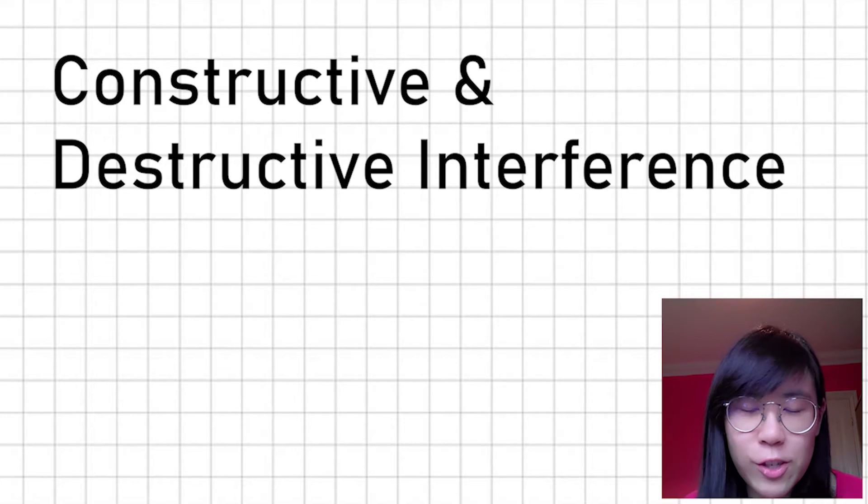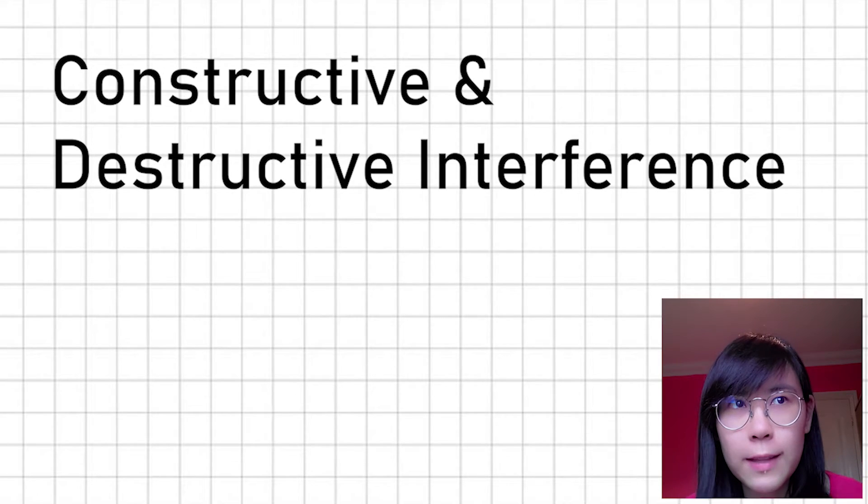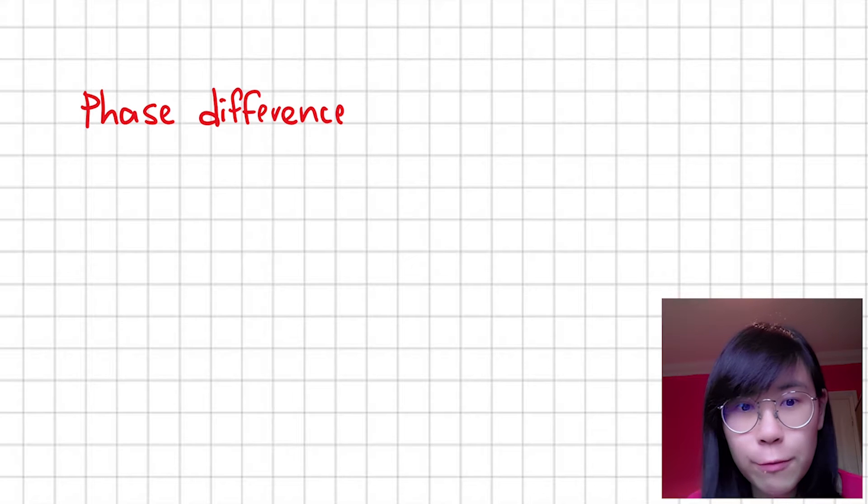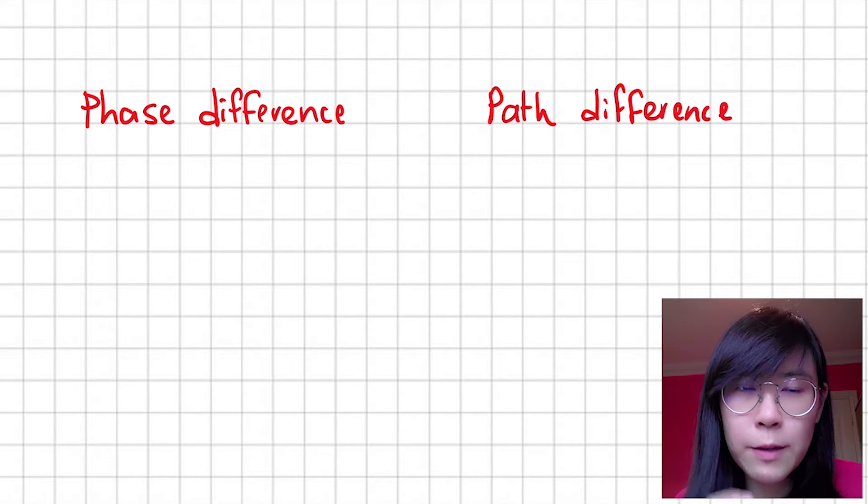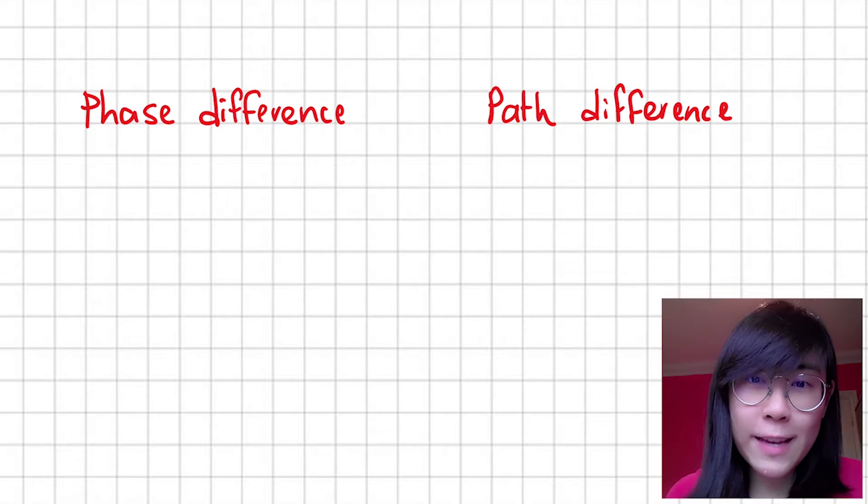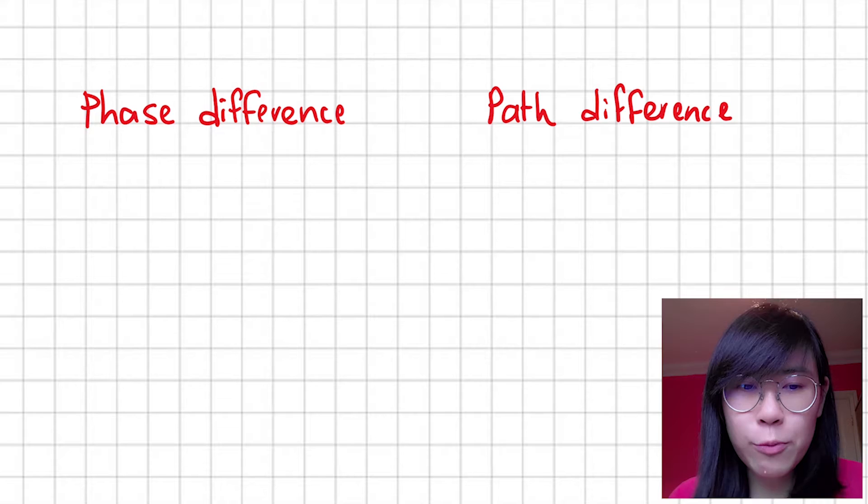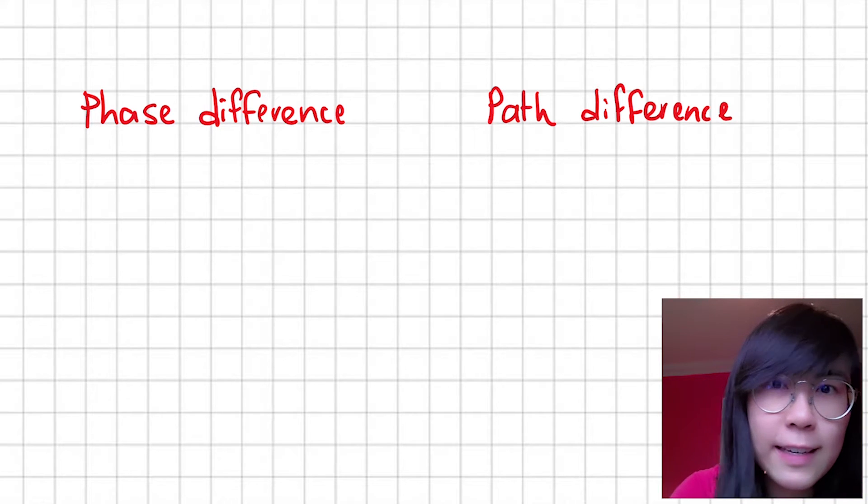We can define the relationship between two waves by looking at either their phase difference or their path difference. In this video, we're just going to focus on path difference, but if you want to learn a little bit more about phase difference, you can check out my previous video. I'll leave a link in the description below.